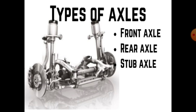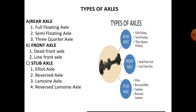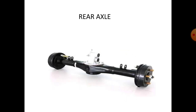There are mainly three types of axles: front axle, rear axle, and stub axles. The rear axle sub-types are full floating axle, semi-floating axle, and three-quarter axle. The front axle sub-types are dead front axle and live front axle. The stub axle types are Elliot axle, reversed axle, Lemoine axle, and reverse Lemoine axle.